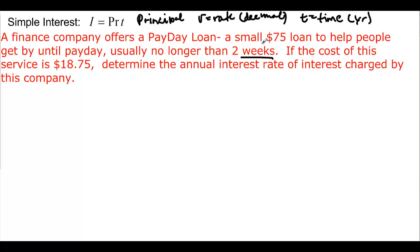Let's see what we have. We have a small loan of $75, and this is going to be our P — that's how much we're putting in. Then we have two weeks, which is going to be our T, but we've got to think about converting the weeks. They tell us $18.75, and that's going to be our I. They want us to find R.